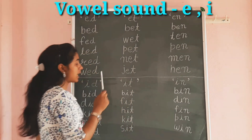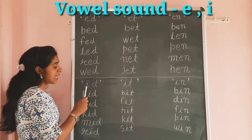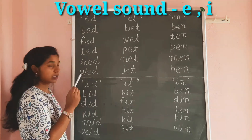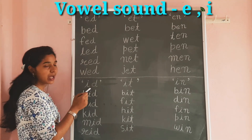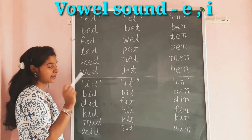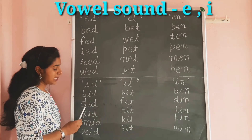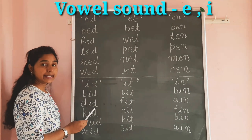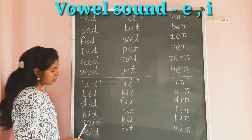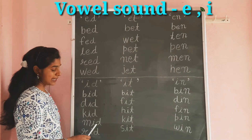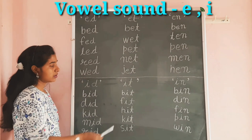Now we learn the sound of I. We make words with the help of I-D: B-I-D, Bid. D-I-D, Did. K-I-D, Kid. M-I-D, Mid. R-I-D, Rid.